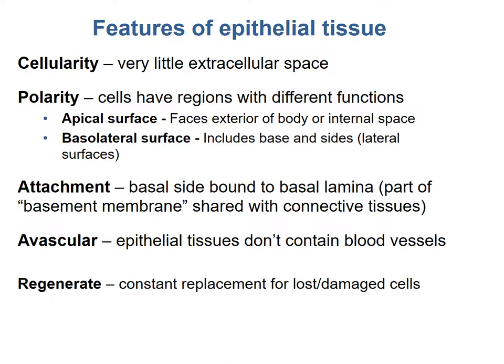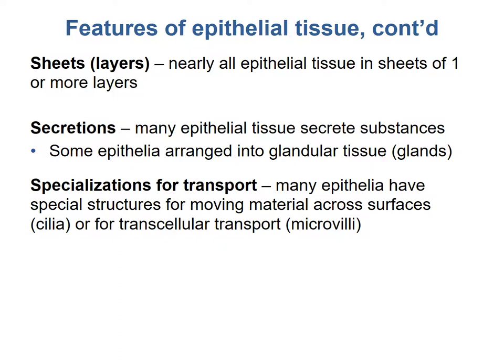The basal lamina is shared with connective tissue. Epithelial cells are all avascular, meaning they have no blood vessels and obtain nutrients via transport across the cell membrane, and are reproduced through stem cells. This leads to regeneration — epithelial cells are constantly regenerated to replace lost or damaged cells using germinative or stem cells. The cells are organized in sheets or layers, and many have specialized structures for moving material across the membrane, such as cilia or microvilli.